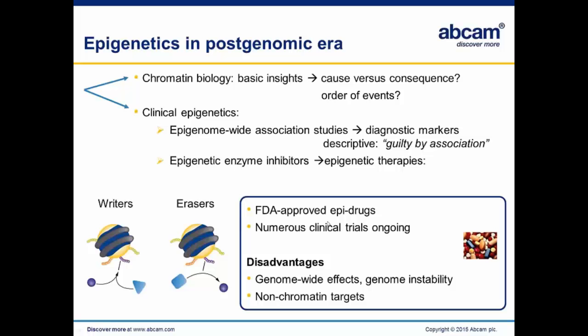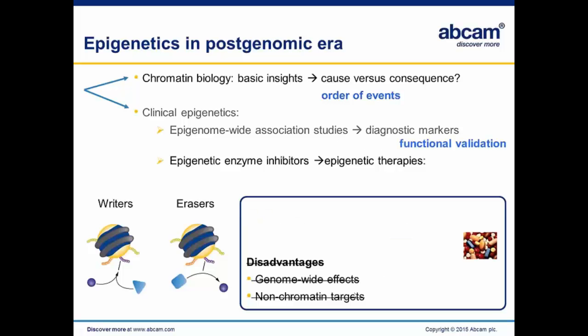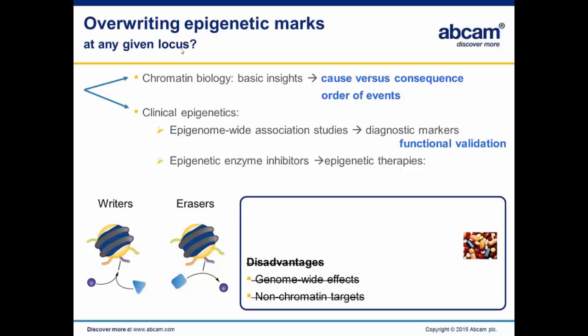However, inhibiting enzymes which act genome-wide might result in unintended genome-wide effects, like the up- or down-regulation of unintended genes, and may also result in genome instability. Moreover, epigenetic enzymes do affect non-chromatin targets, which might also result in unintended effects. So I reasoned that if we could override epigenetic marks at any given location, we could start to provide more insights into mechanisms, including cause versus consequence and order of events. For the long list of epigenetic mutations, we might start to functionally validate their biological functions, and in the future have a novel avenue to circumvent some disadvantages of current epigenetic therapies.